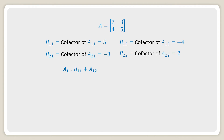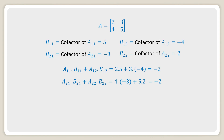Taking the first row and their cofactors: A11 into B11 plus A12 into B12 equals 2 into 5 plus 3 into minus 4, which equals minus 2, and this value is the determinant of A. Again taking the second row and their cofactors: A21 into B21 plus A22 into B22 equals 4 into minus 3 plus 5 into 2, which also equals minus 2, the value of the determinant.